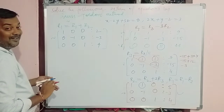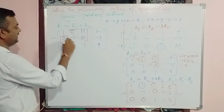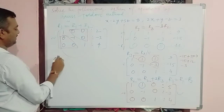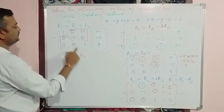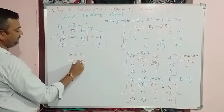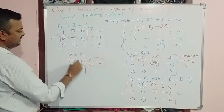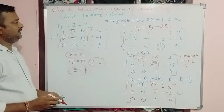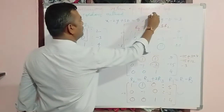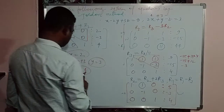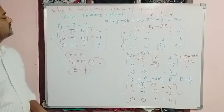Writing in equation form: x = 2; -y = -3, so y = 3; and z = 4. This is the solution of the given system by Gauss-Jordan method. You can verify using the third equation: 2×2 + 3 - 4 = 4 + 3 - 4 = 3. Correct! That's the solution by Gauss-Jordan method.